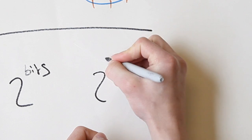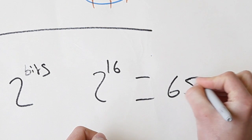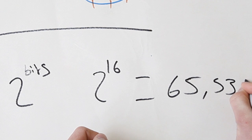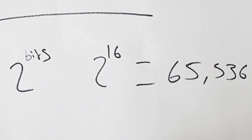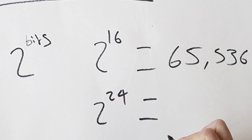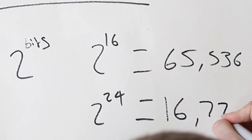So 16 bit audio would be 2 to the power of 16, which is 65,536 possible amplitudes, and 24 bit would be 2 to the power of 24, which is a big number.